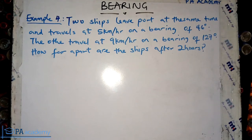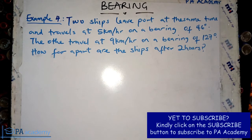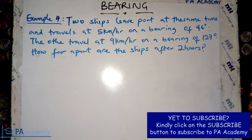Hello and welcome to PA Academy. This is part four of the video series on bearings. If you missed the previous parts, kindly check the description for links. In example four, the question says: two ships leave port at the same time — one travels at five kilometers per hour on a bearing of 46 degrees, the other at nine kilometers per hour on a bearing of 127 degrees. How far apart are the two ships after two hours?